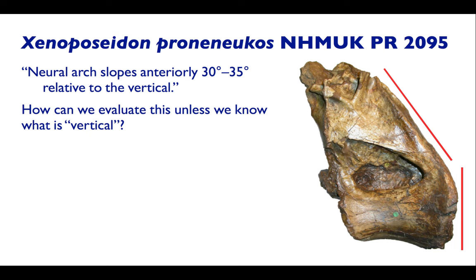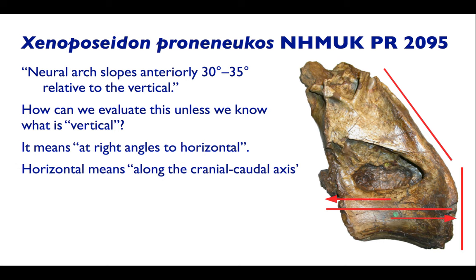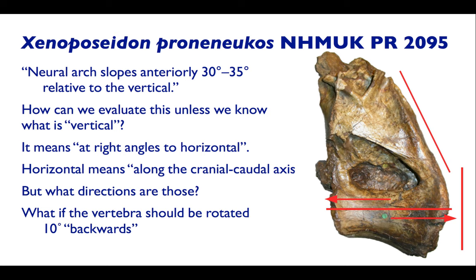How can we evaluate this unless we know what we mean by vertical? We know that vertical means at right angles to the horizontal, but what do we mean by horizontal? It's the direction of the cranial-caudal axis — but again, which directions are those? Which way is cranial? Which way is caudal? We have a rough sense of it, but can we become more rigorous? It's important to be more rigorous because it affects things like this diagnostic character.